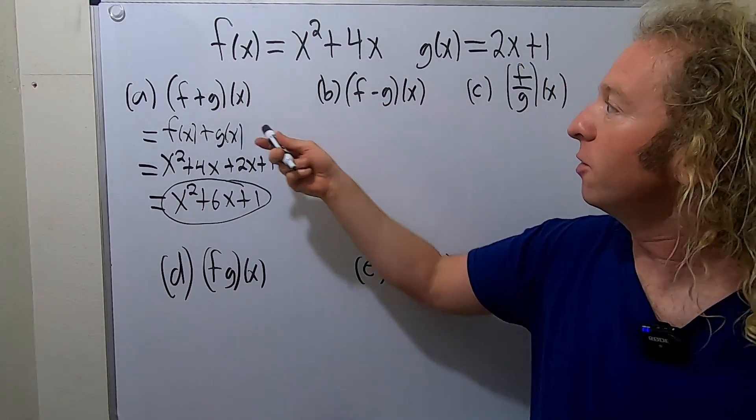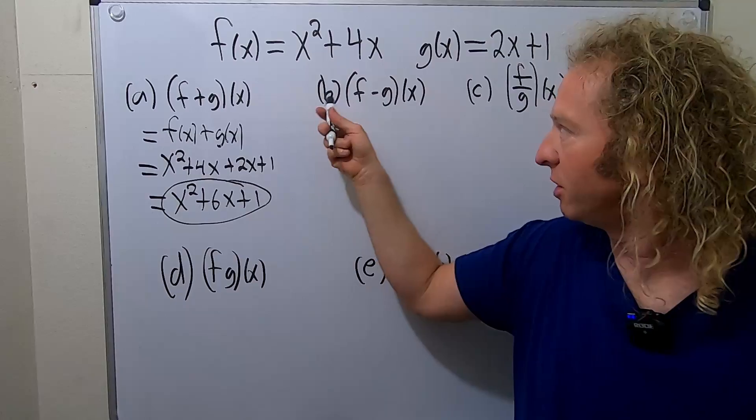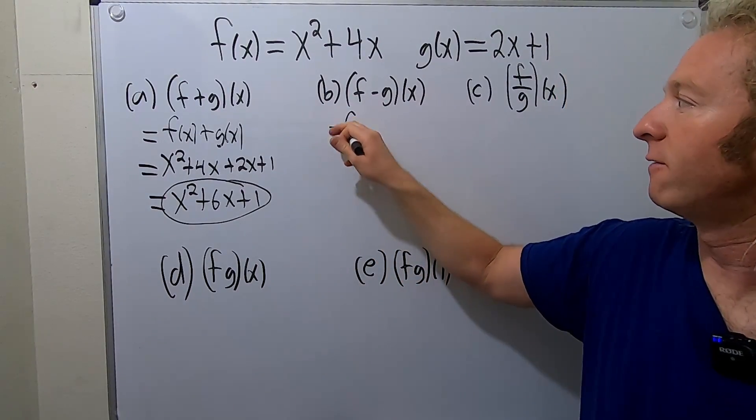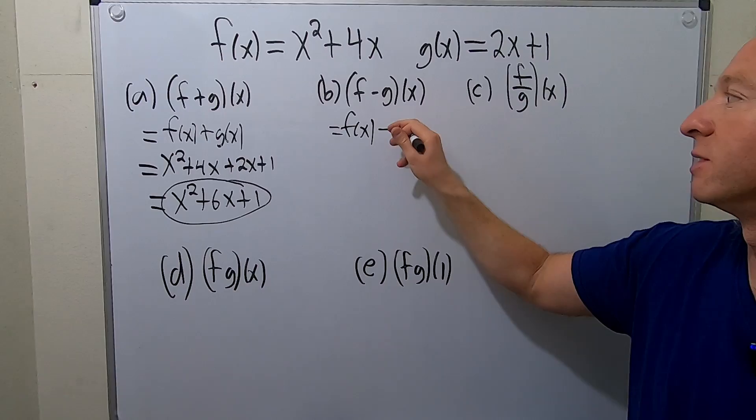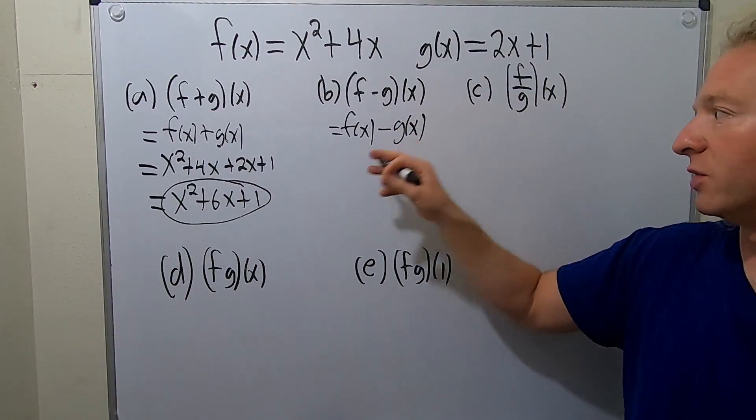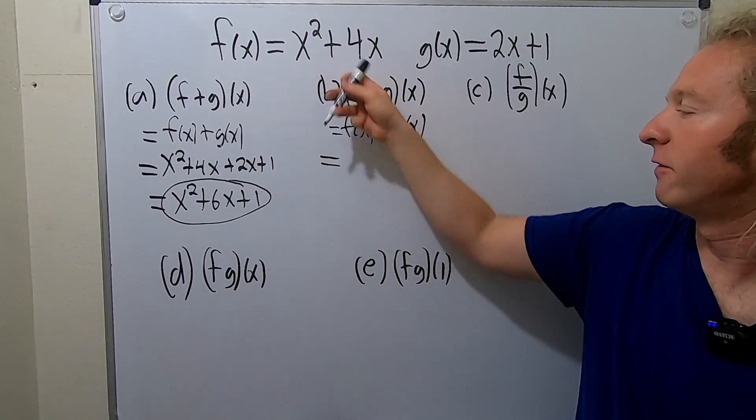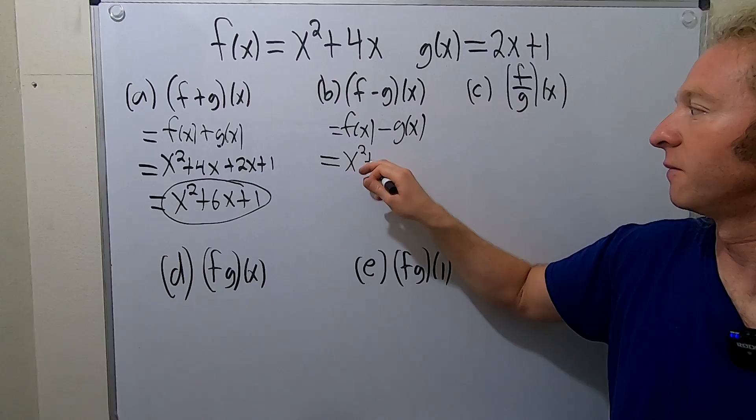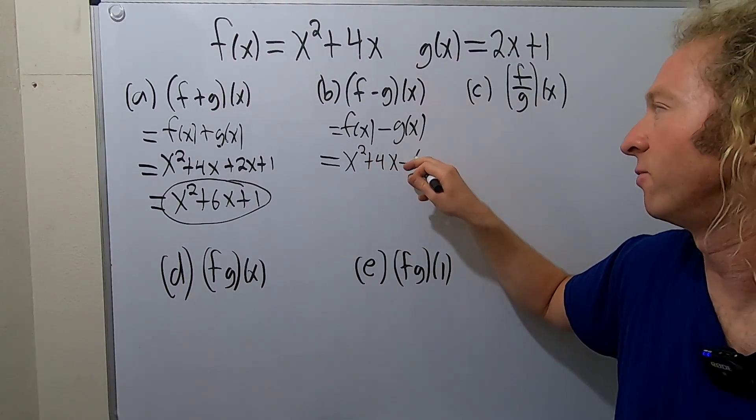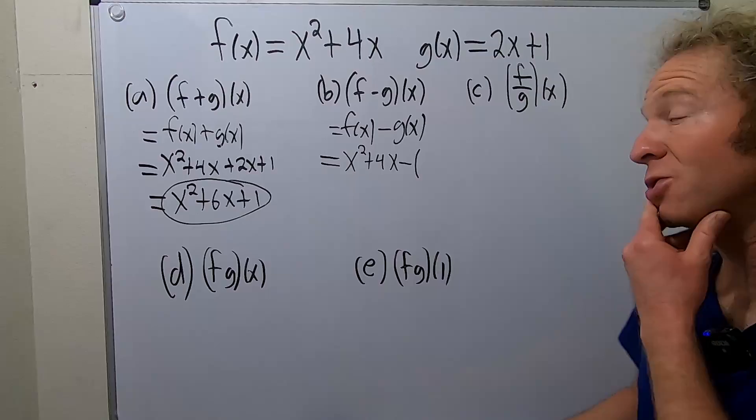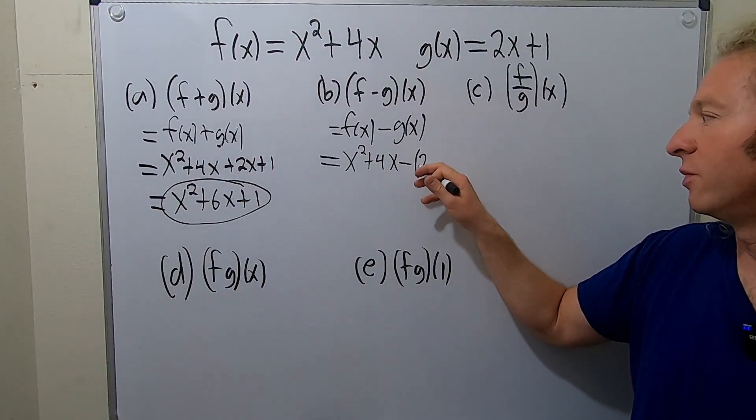So as before, we replaced f with f and g with g. Here's the same thing. This is equal to f of x, except this time it's minus. So it's really important that you have the minus. So now this is equal to f of x is x squared plus 4x, minus, and then it's super important to have parentheses. Those parentheses are super important. So this is 2x plus 1.